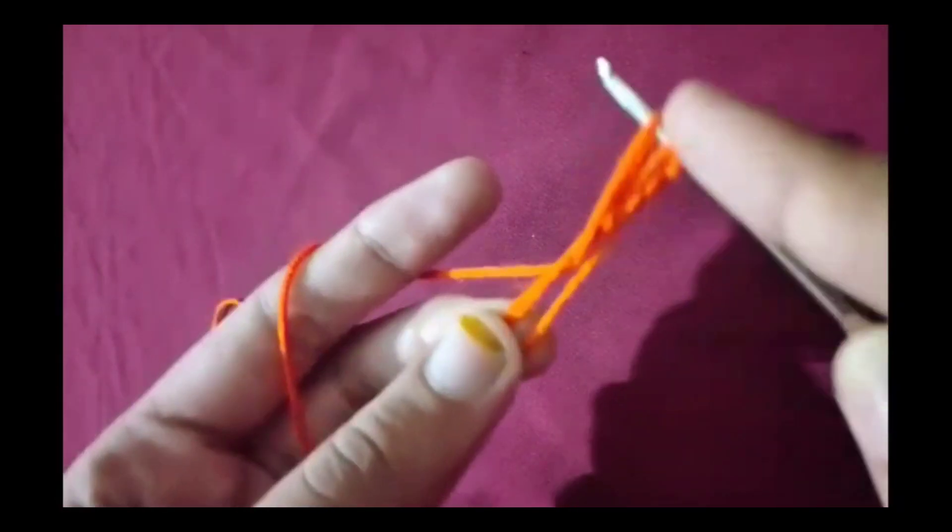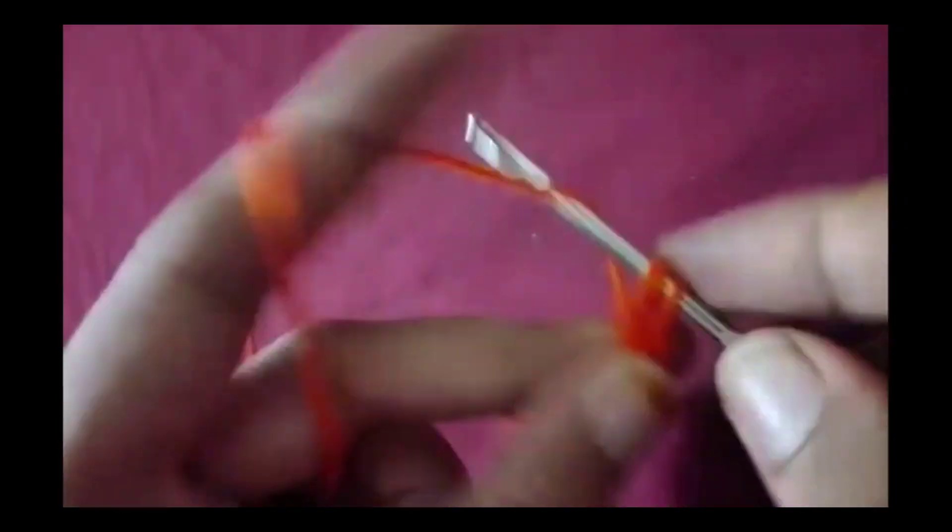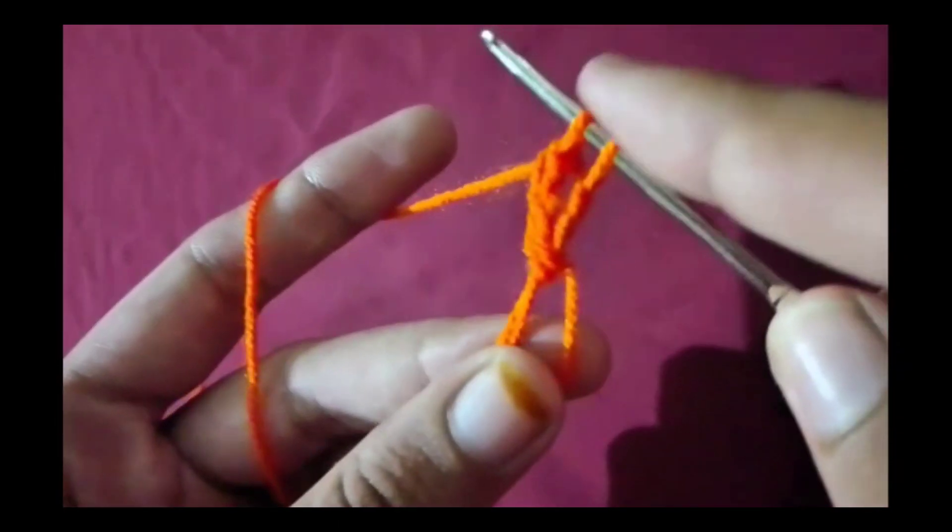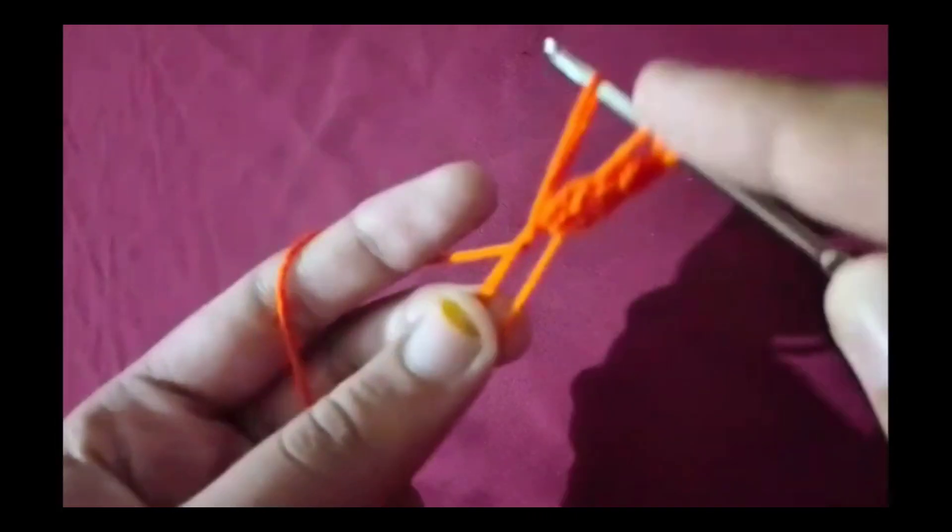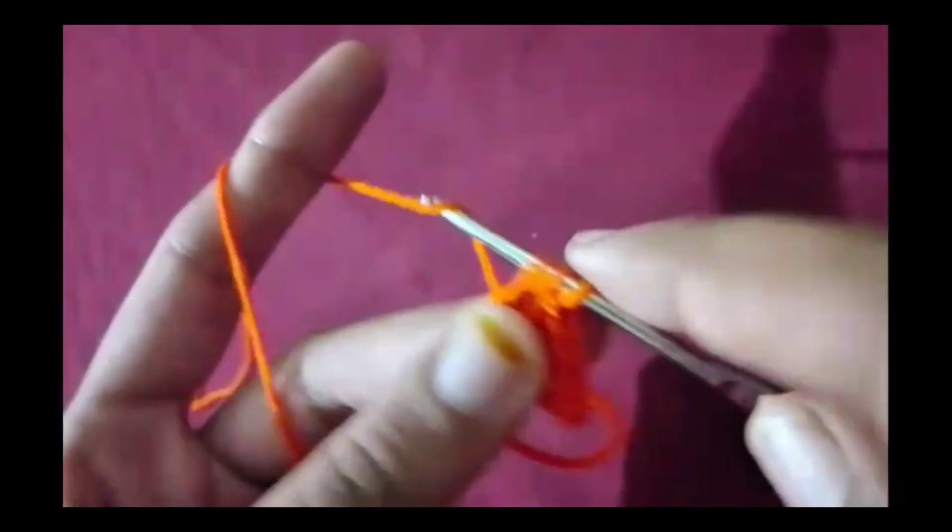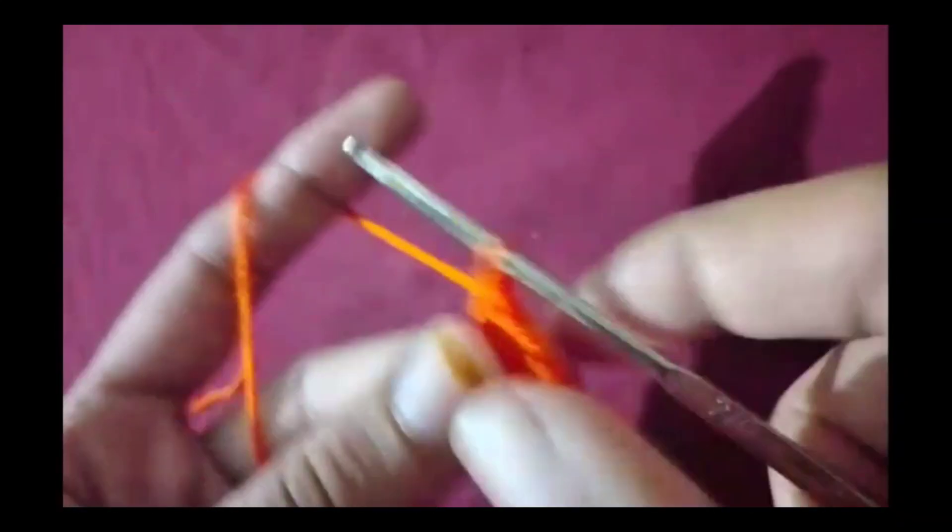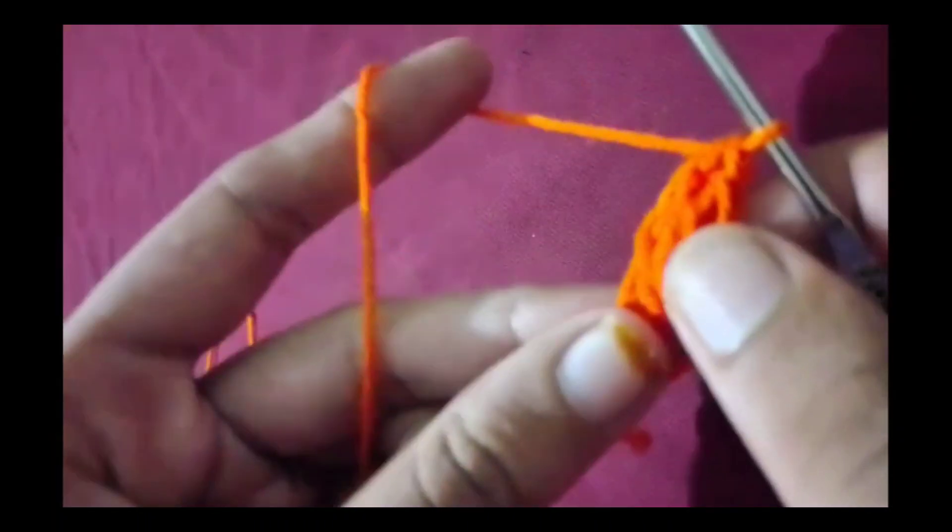Gather your materials. You'll need some yarn, a crochet hook, scissors, and a safety pin. I'm using orange yarn, but you can choose any color you like. I'm using a 4mm crochet hook, but you can adjust according to your yarn.